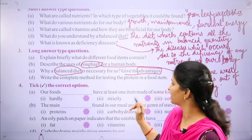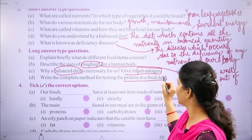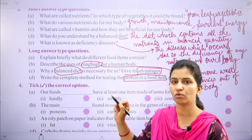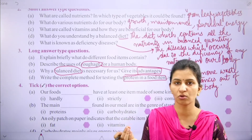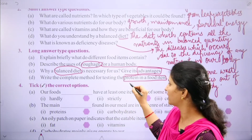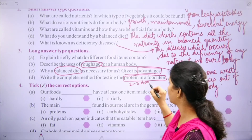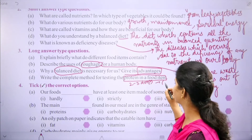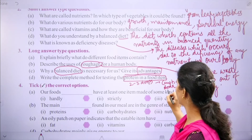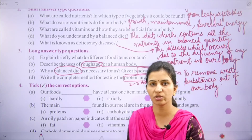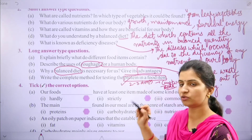Write the complete method for testing protein in a food item. We will take a food sample, whether cooked or raw. We will add 2-3 drops of copper sulfate solution, then add caustic soda. If protein is present, the color of the solution will change.